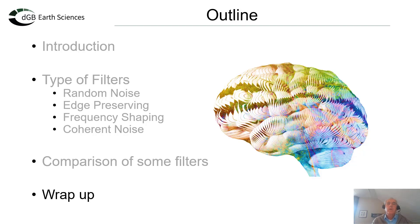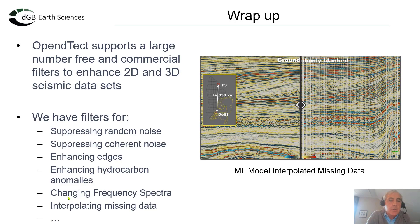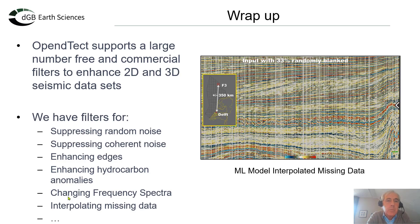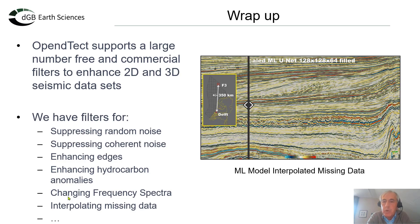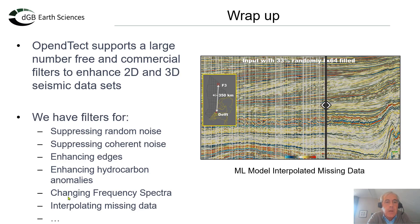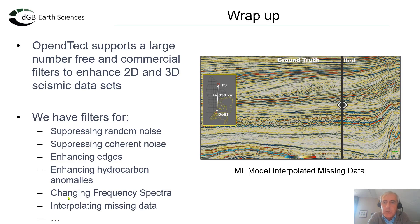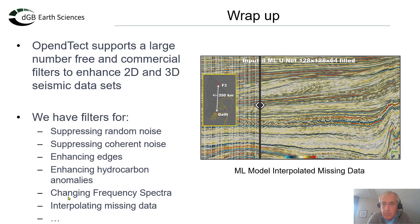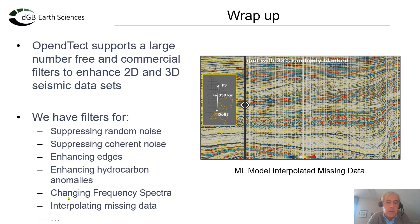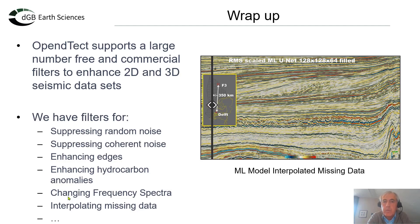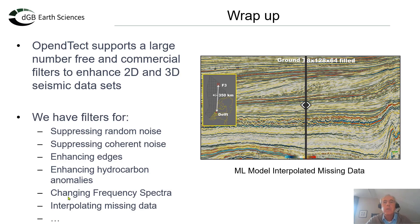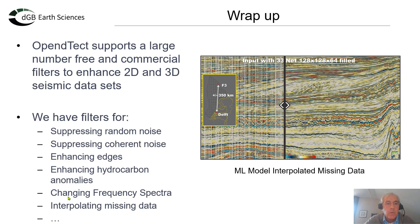Finally, wrap up. OpenDetect supports a large number of free and commercial filters to enhance 2D and 3D seismic data. There are a few pre-stack filters available, but it's really focused on post-processing of already available data. We have filters for suppressing random noise, suppressing coherent noise, enhancing edges in the data, enhancing hydrocarbon anomalies, and changing the frequency spectrum. And if you apply a machine learning model and consider that to be a filter, then interpolating of missing data — which is also one of the trained models in OpenDetect — could also be considered a filter. With that, I thank you for your attention and I'm open for questions.